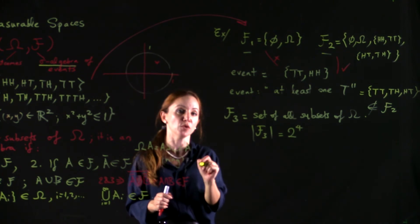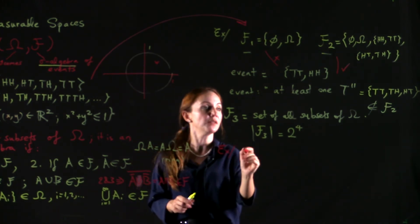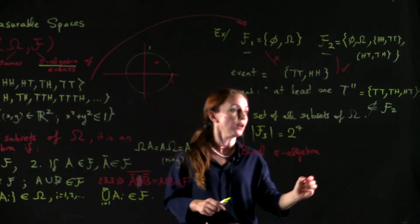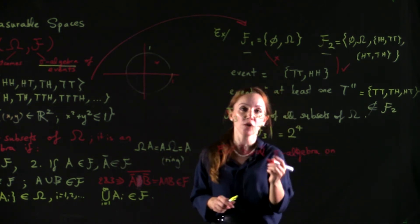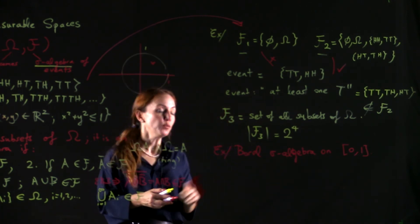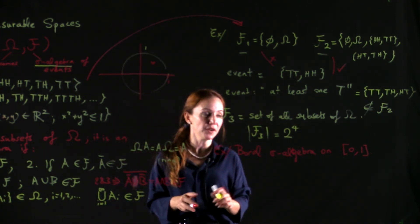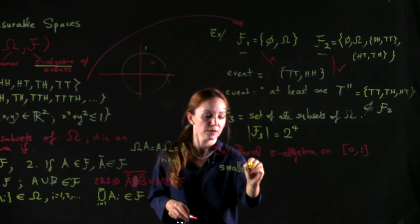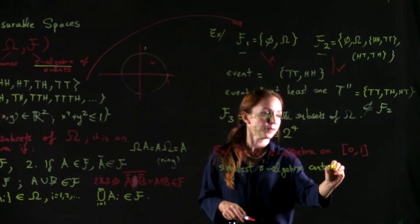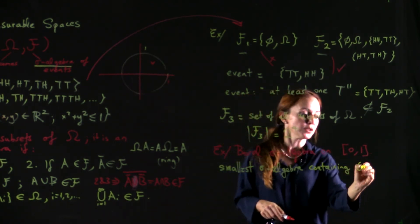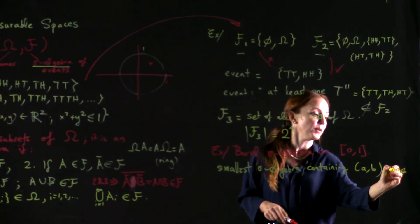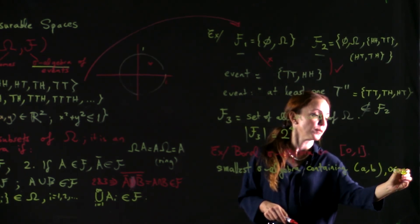Now, this was an algebra. All of these things were algebras. Let's give an important example of a sigma algebra. And that is going to be the Borel sigma algebra. Let's define the Borel sigma algebra on the unit interval 0 to 1. The Borel sigma algebra is very common, and it is the smallest sigma algebra containing all intervals a, b, where a and b are between 0 and 1.